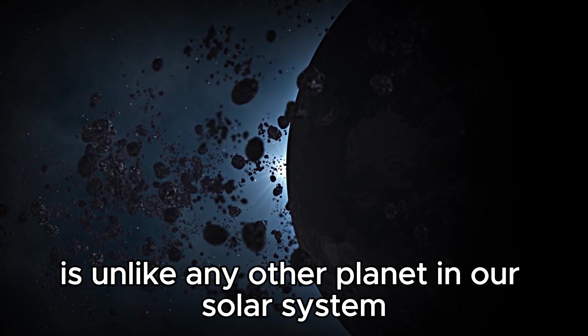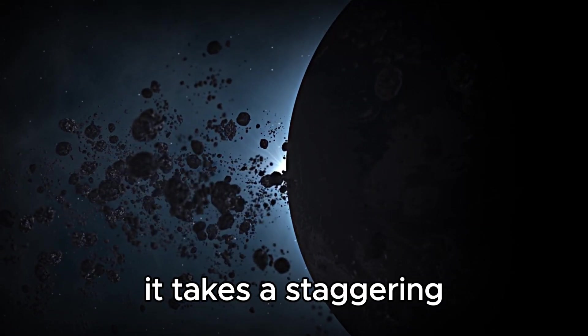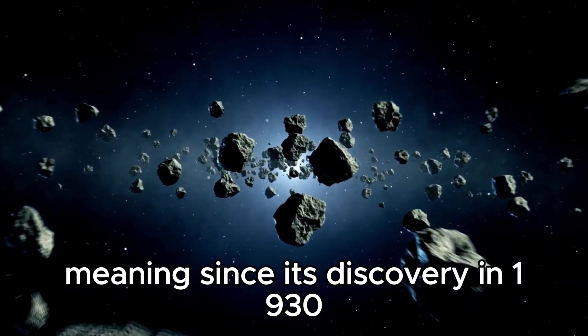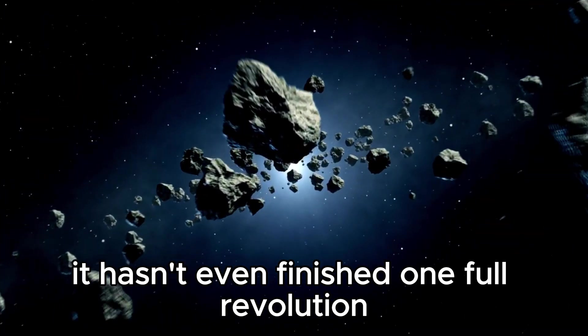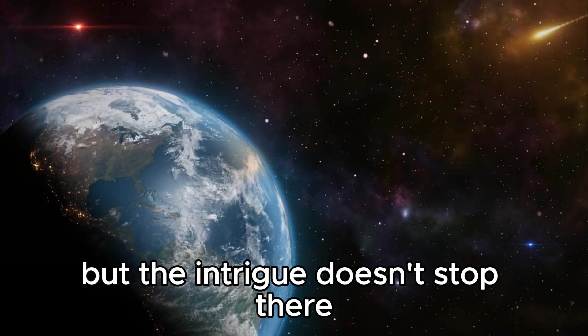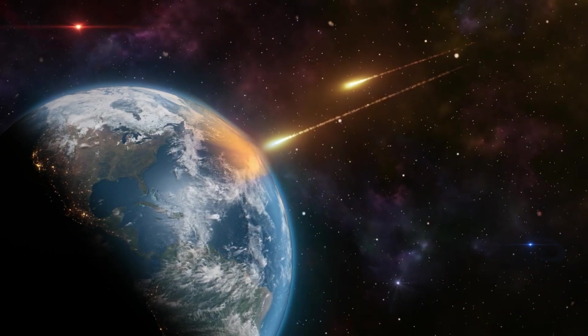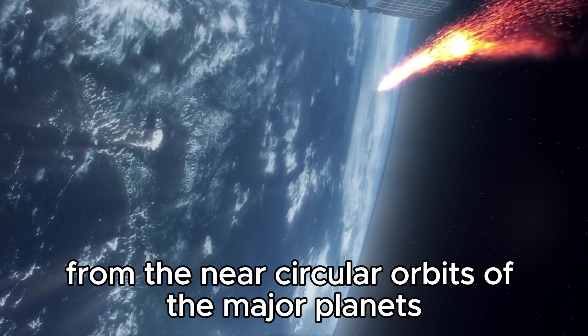Pluto's journey around the Sun is unlike any other planet in our solar system. It takes a staggering 248 years to complete a single orbit, meaning since its discovery in 1930, it hasn't even finished one full revolution. But the intrigue doesn't stop there. Pluto's path is marked by its highly elliptical shape, deviating significantly from the near-circular orbits of the major planets.